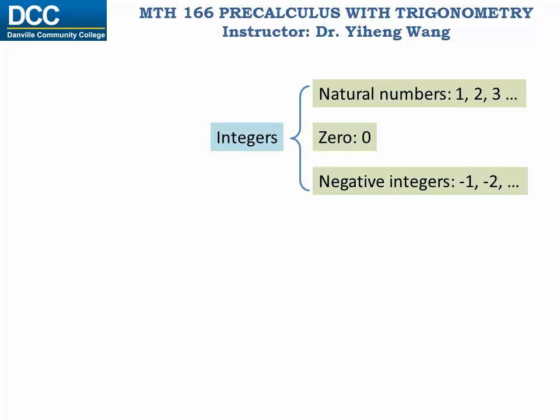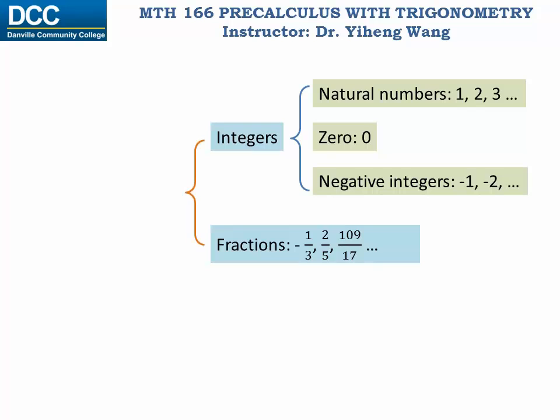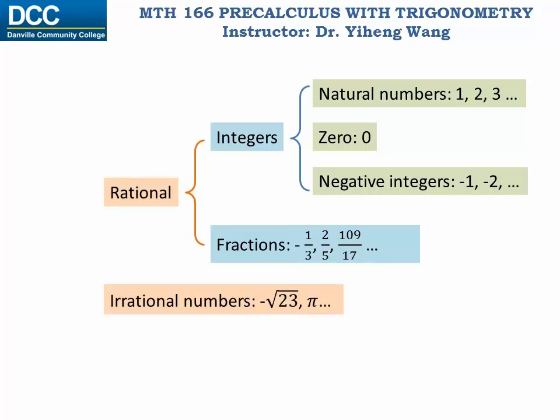And then we learned about fractions, both positive and negative, such as two-thirds, negative one-seventh, etc. Integers and fractions are both rational numbers. And we also learned about irrational numbers, like the square root of five and pi. Rational numbers as well as irrational numbers are all known as real numbers.